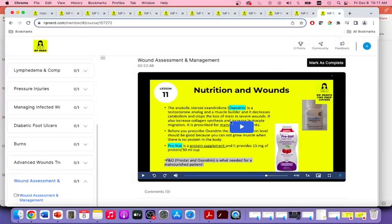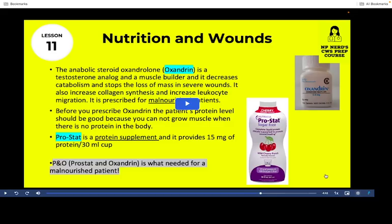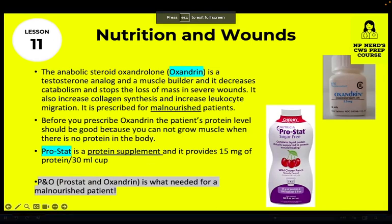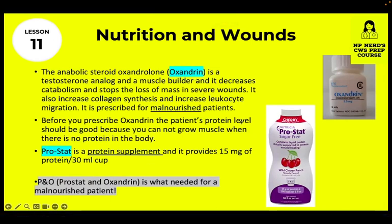Lesson 11 covers wound assessment. One topic that may be on the test is Oxandrin and Prostat. Oxandrin is prescribed for malnourished patients — it is a muscle builder that decreases catabolism, stops loss of mass in severe wounds, and increases collagen synthesis, helping wound healing. Before prescribing Oxandrin, make sure the patient's protein level is adequate, and also order Prostat, which is a protein supplement providing 15 milligrams of protein per 30 ml.